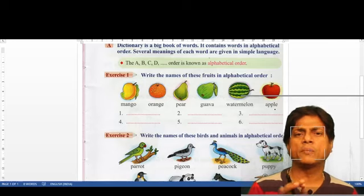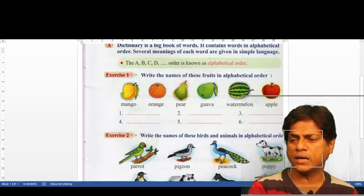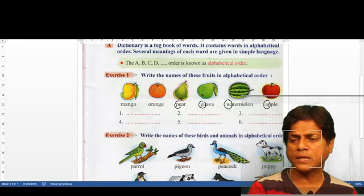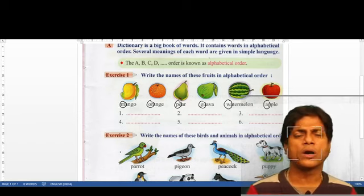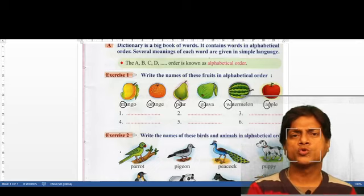So we have to write them in alphabetic order. Let us look at the first. We look at each name's first alphabet. The first alphabet kya hai - W? No. The first alphabet kya hai - G? No. The first alphabet kya hai - P? No. The first alphabet kya hai - O? No. The first alphabet kya hai - M? We have to see which is the first alphabet in English alphabetical order.